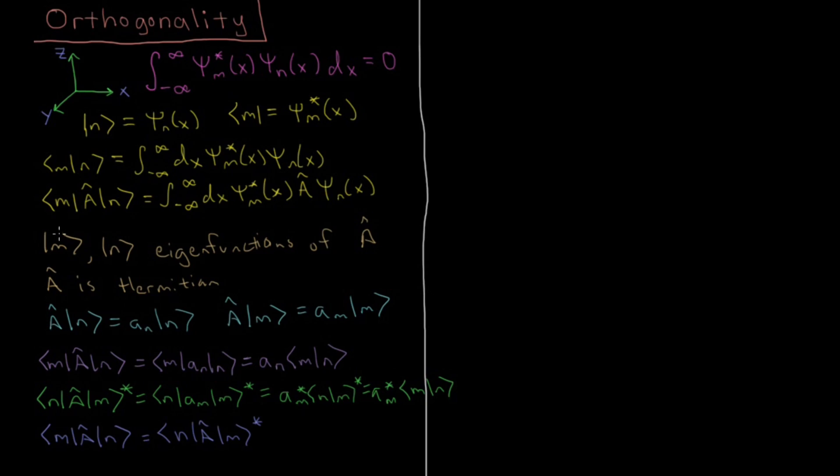So these two expressions that we have at the end of these lines can be set equal to each other. So we have a_n m, n equals a_m star m, n. So that's neat. Let's use this for some specific cases. Before we do that, let's simplify this to where we have a_n minus a_m star, product there. Let's separate those two sides there, times the integral m, n equals zero.